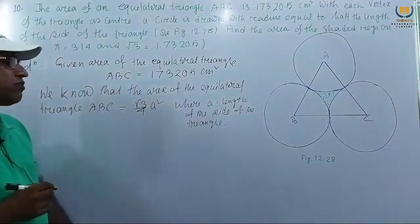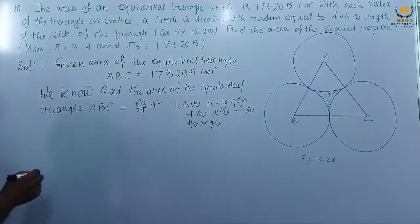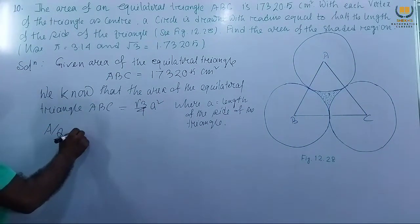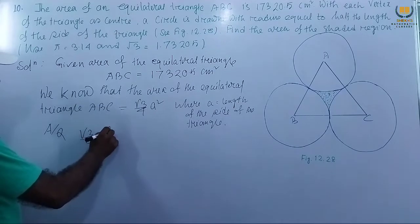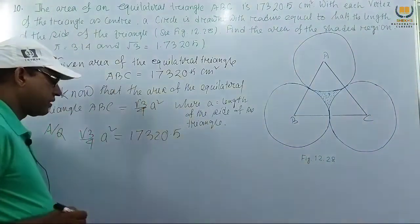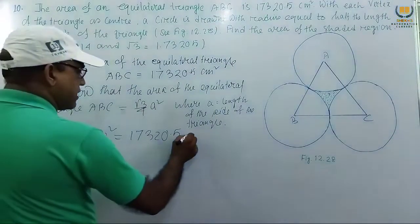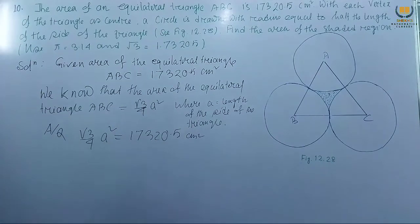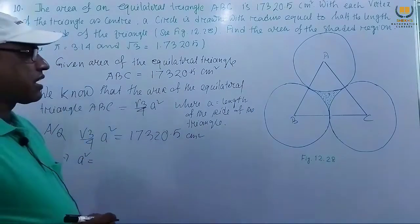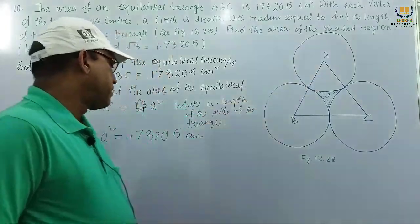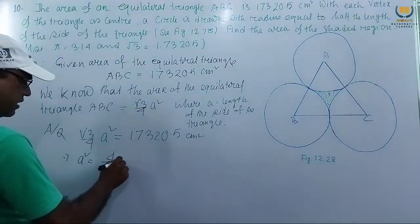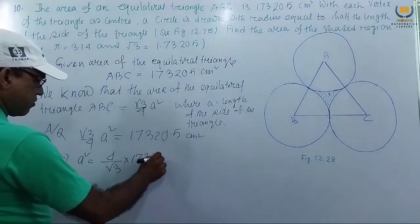So, setting this area equal to the given value: (√3/4) × a² = 17320.5 cm². Our target is to find the length of the side, so: a² = (4/√3) × 17320.5.